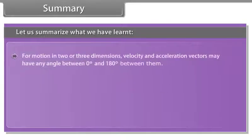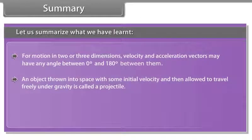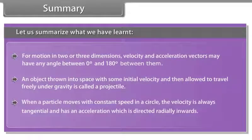For motion in two or three dimensions, velocity and acceleration vectors may have angle between zero degrees and 180 degrees between them. An object thrown into space with some initial velocity and then allowed to travel freely under gravity is called a projectile. When a particle moves with constant speed in a circle, the velocity is always tangential and has an acceleration which is directed radially inward.